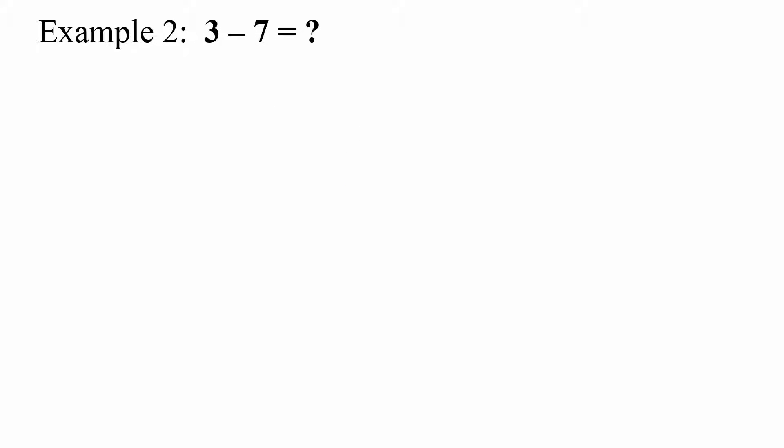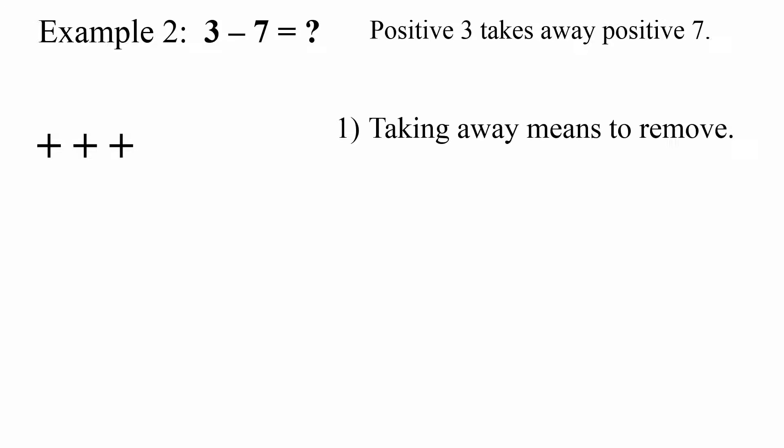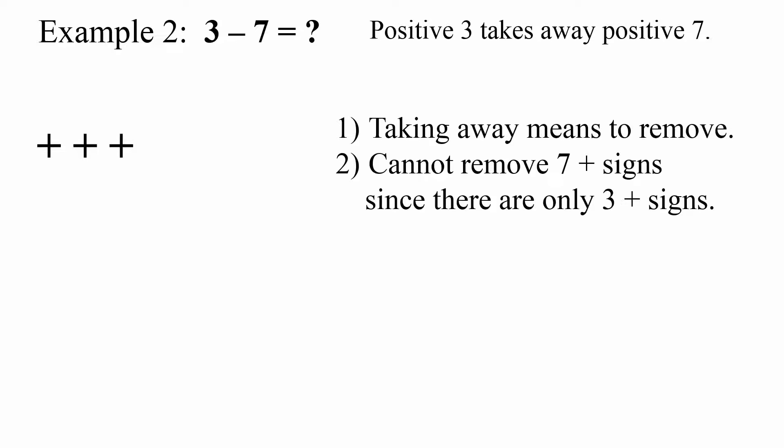Example 2: positive 3 take away positive 7. I have 3 positive. Take away means to remove. I cannot remove 7 positive since there are only 3 positive.